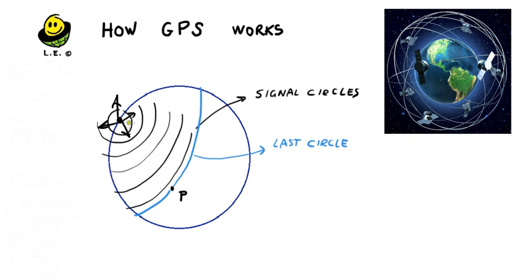The signal sent from satellite A carries information. The first one is the position of the satellite when the signal was sent. The second is the exact time of departure of the signal.